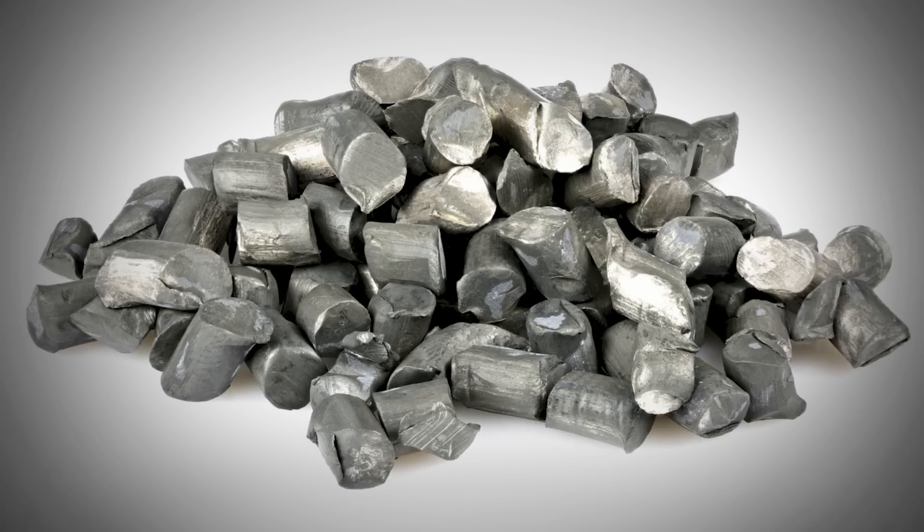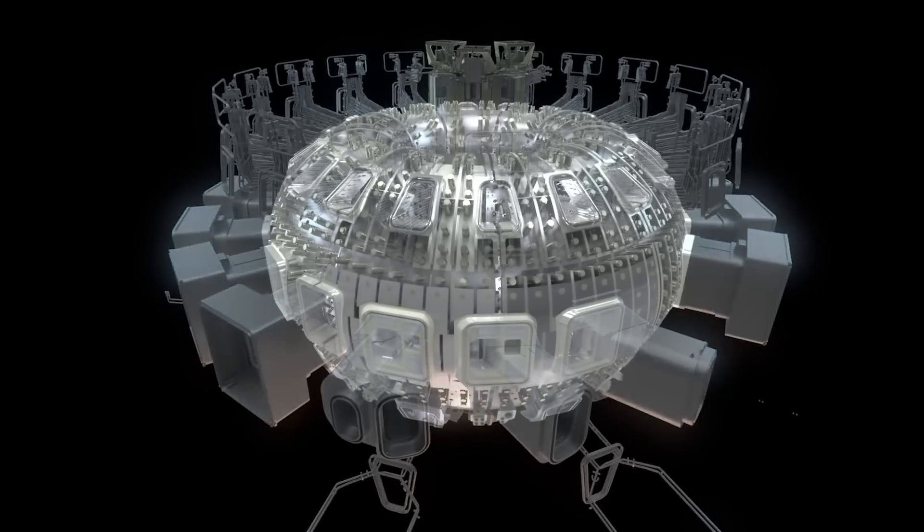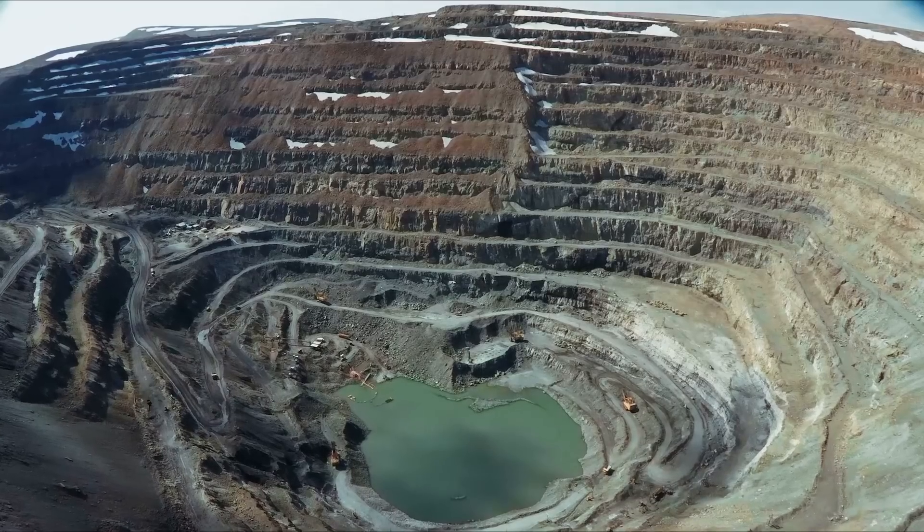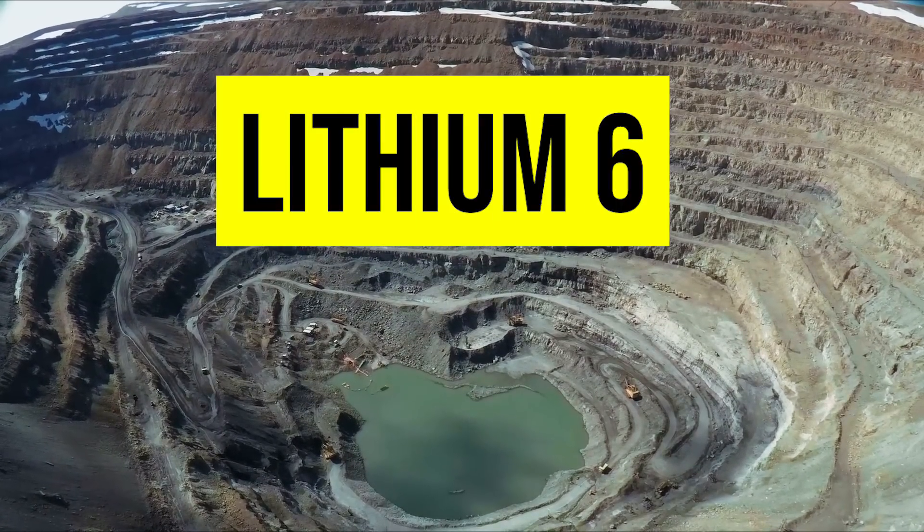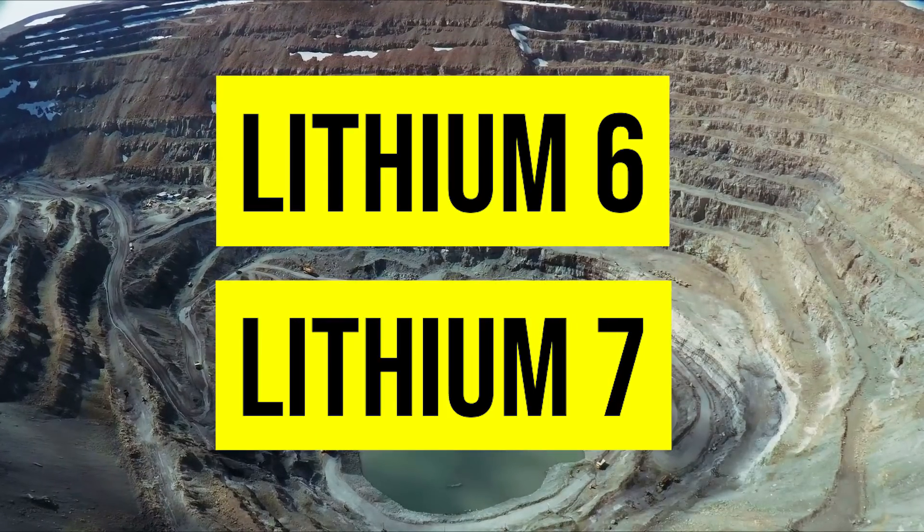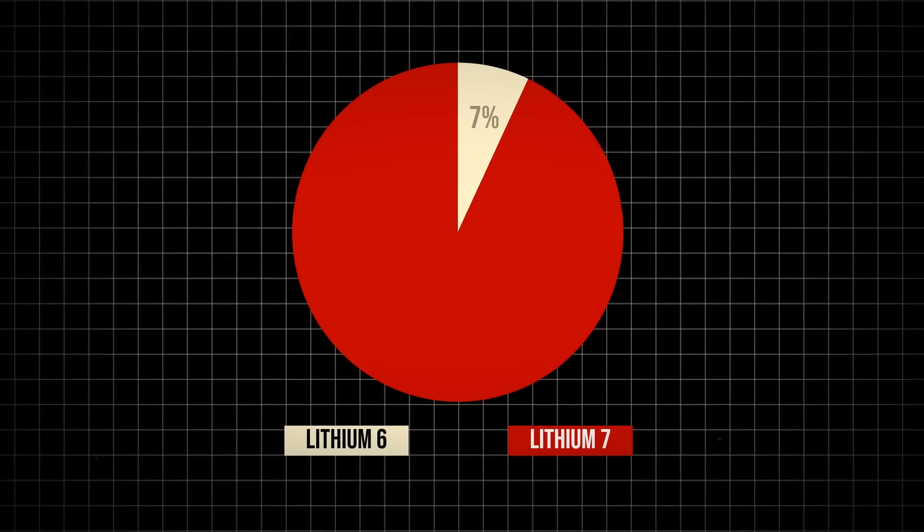And secondly, the lithium in the tritium breeding blanket is not your average lithium. Specifically, this needs to be lithium-6. See, when we mine lithium, it is actually made up of two isotopes, lithium-6 and lithium-7. Unfortunately, lithium-6 is less abundant, as it only makes up around 7% of naturally occurring lithium.